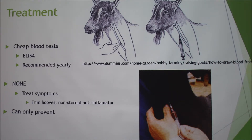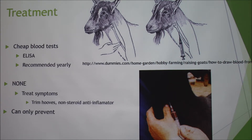There is no treatment for the viral infection itself, so once an animal has it they can't get rid of it. However, you can treat the symptoms — the encephalitis and the arthritis. A lot of the treatments for the arthritis involve keeping good herd management, such as trimming their hooves. Non-steroidal anti-inflammatories can also help with the pain.